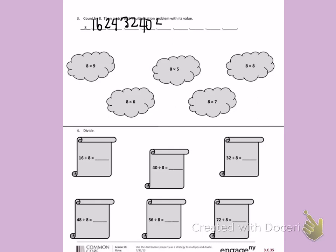40 plus 8 more will give me 48. 48 plus 8 more. 48, 49, 50, 51, 52, 53, 54, 55, 56.